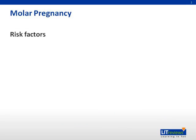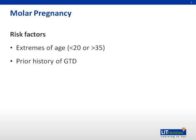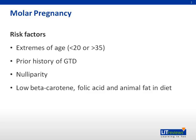Some of the risk factors for molar pregnancies include extremes of age, that is, below 20 or above 35, a prior history of gestational trophoblastic disease, nulliparity, a diet low in beta-carotene, folic acid, and animal fat, smoking, and usage of OCPs.